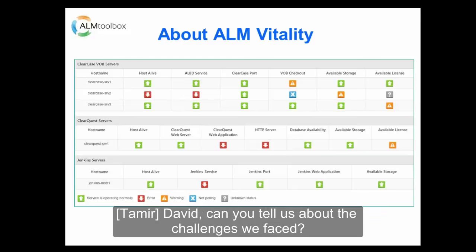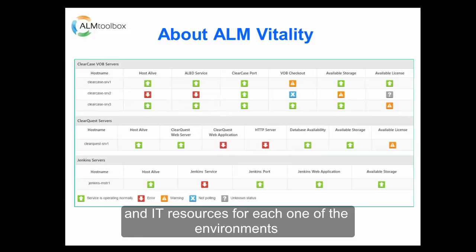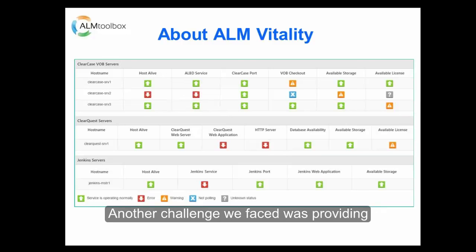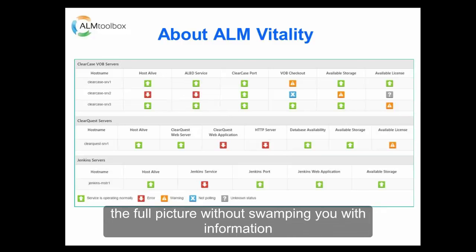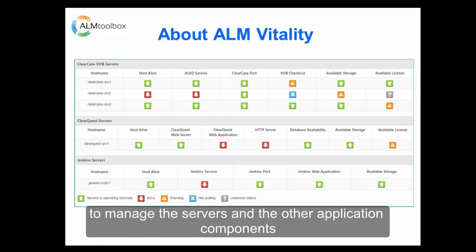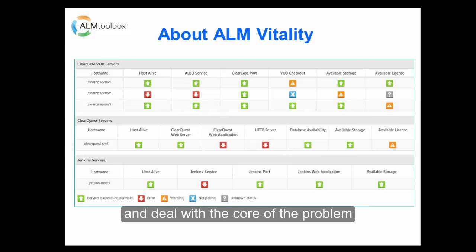David, can you tell us about the challenges we faced? The challenges of the design were mapping the critical components and IT resources for each one of the environments and deciding on the optimal tests to check the status of each component. Another challenge we faced was providing the full picture without swamping you with information. ALM Vitality is a tool made for busy people — people that cannot allocate the time to manage the servers and the other application components. This allows the user, in case of a failure, to find the root cause of the failure faster and deal with the core of the problem.